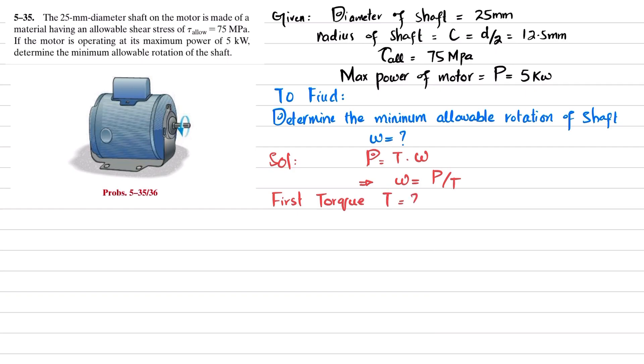We know that the maximum allowable shearing stress due to torsion or torque is equal to T times c divided by J. What is J? J is the polar moment of inertia, and for a circular shaft it is equal to π by 2 times c to the power 4. So π by 2 times c is 12.5 millimeters, so in terms of meters it is 0.0125 to the power 4. When you calculate it, you will get J is equal to 38.3495 times 10 raised to power minus 9 meters to the power 4.